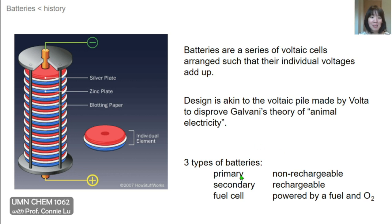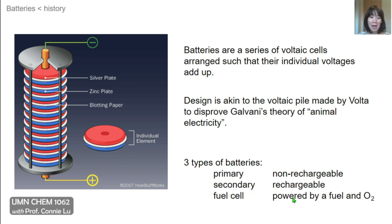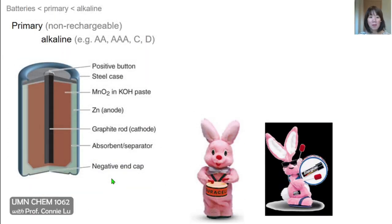There are three general categories of batteries. There are primary batteries that are non-rechargeable, secondary batteries that are rechargeable, and fuel cells are a distinct category because they are powered by a fuel and oxygen.